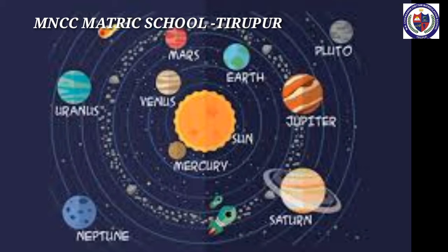Inner planets: The 4 planets nearer to the sun are called inner or terrestrial planets — Mercury, Venus, Earth and Mars. The surface of inner planets has mountains, valleys and craters. The last 4 planets are called outer planets or Jovian planets — Jupiter, Saturn, Uranus and Neptune. They are also called gaseous giants. An asteroid belt is formed between Mars and Jupiter.